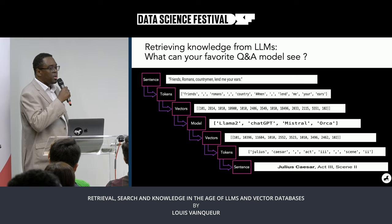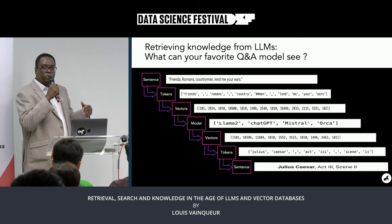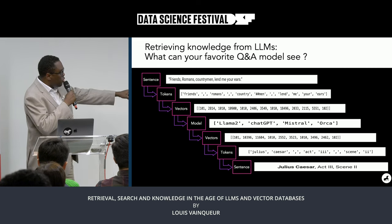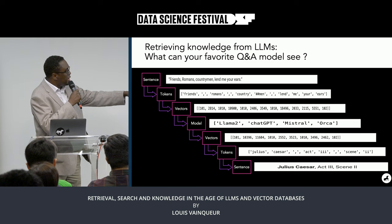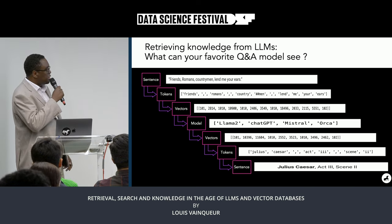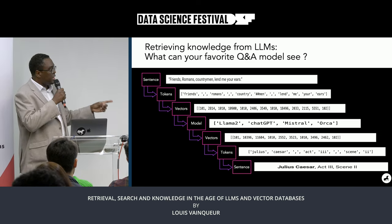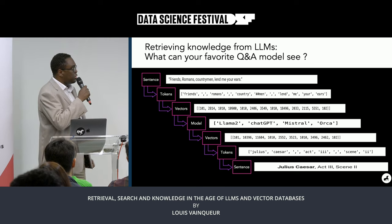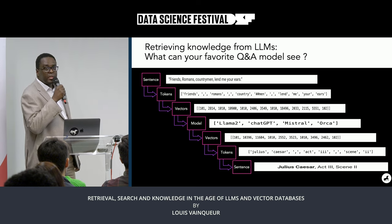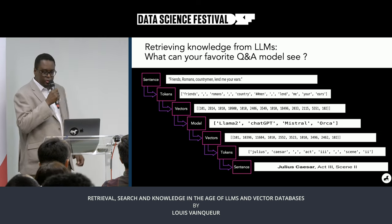When you look at the first vectors, each number represents a word. Token 101 represents the beginning of the sentence, and 102 at the end always represents the end of the sentence. Once those vectors are tokenized, this vector will be passed to the model — it could be LLaMA 2, ChatGPT, Mistral, Orca, whichever you want. The output of this process will also produce a series of vectors.